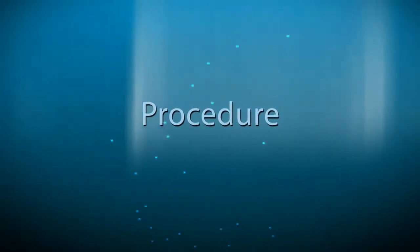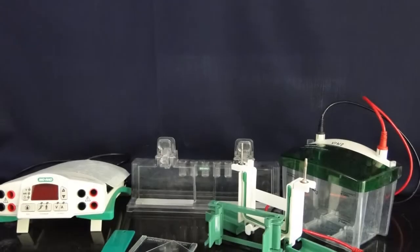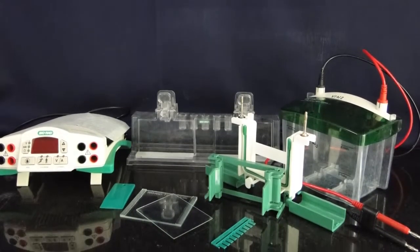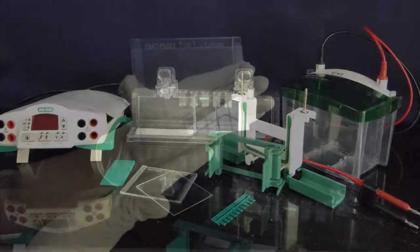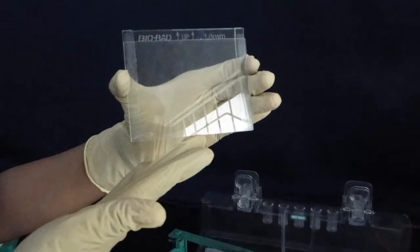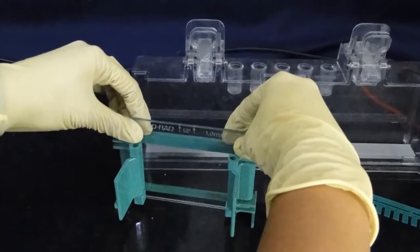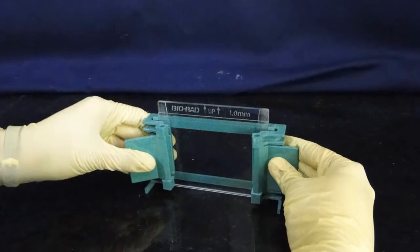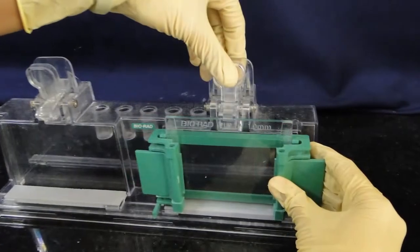Procedure. The experiment begins by assembling the glass plates. Assemble the glass plates on a clean surface. Lay the longer glass plate down first and then place the shorter glass plate on top of it. Embed them into the casting frame now and clamp them properly. Make sure that the bottom ends of the glass plates are properly aligned. Then place the frame on the casting stand.